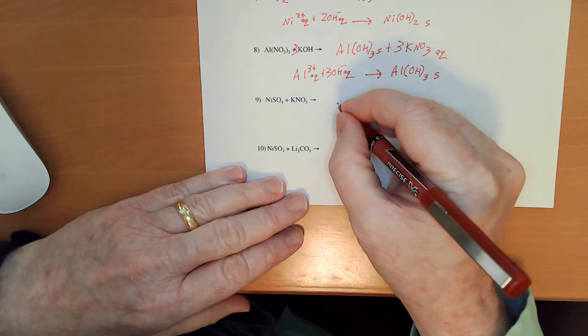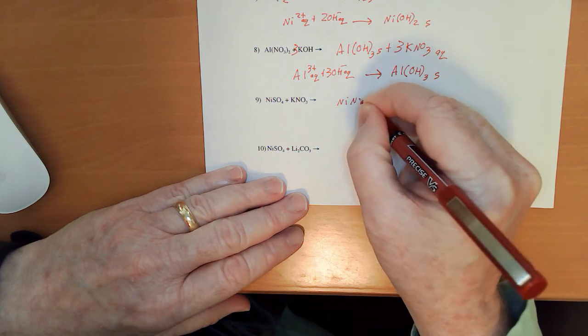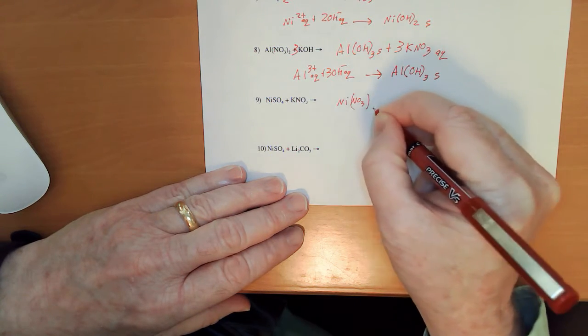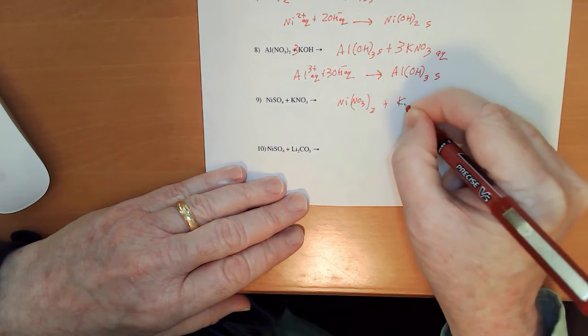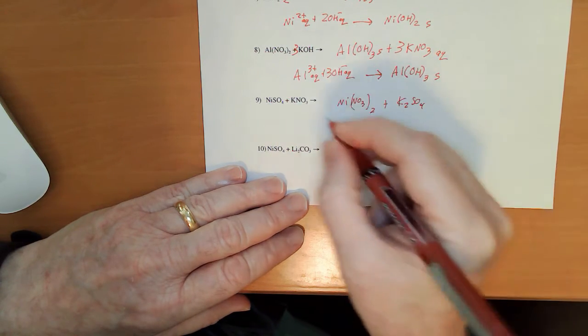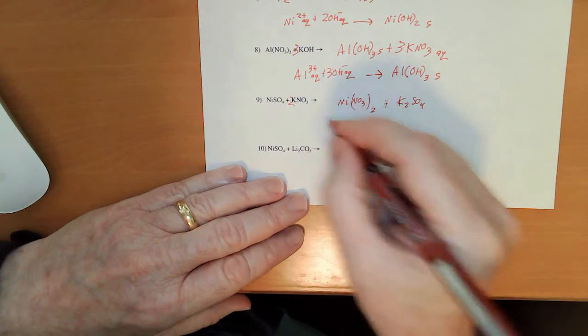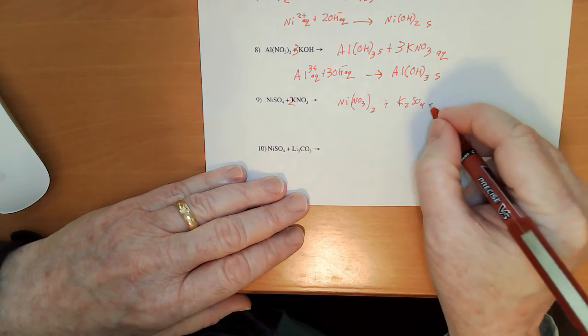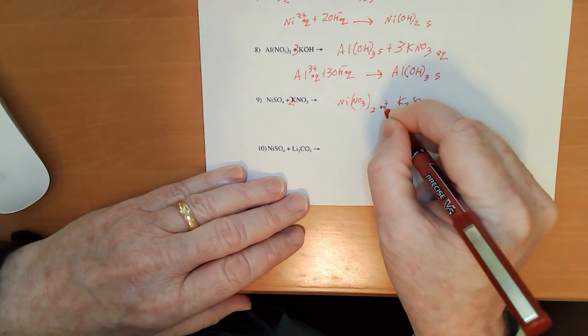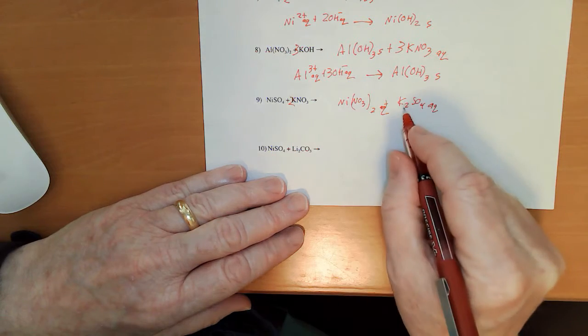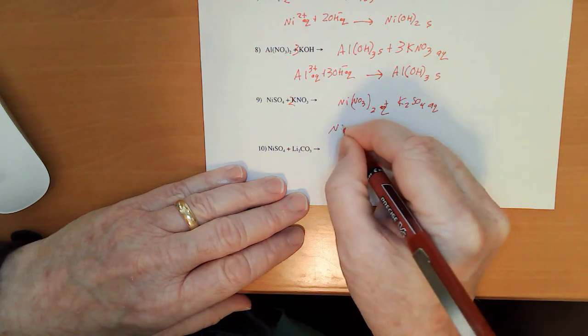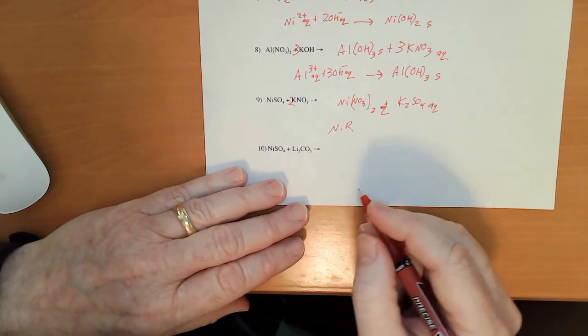Partner exchange. Ni NO3 sub 2. K2SO4. Got to balance that with a 2. Hey, wait a minute. These are both aqueous. That's a nitrate and that's a group 1, so no reaction here. Not going to happen.